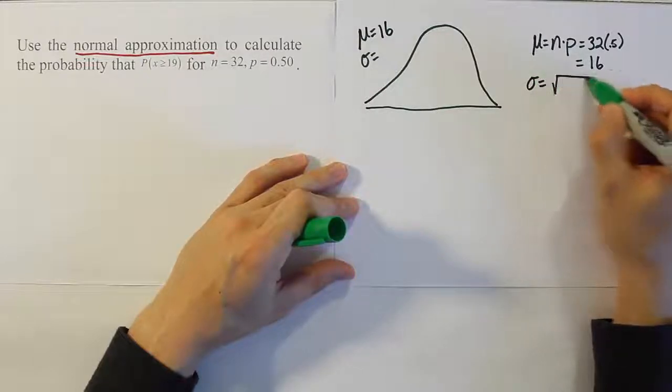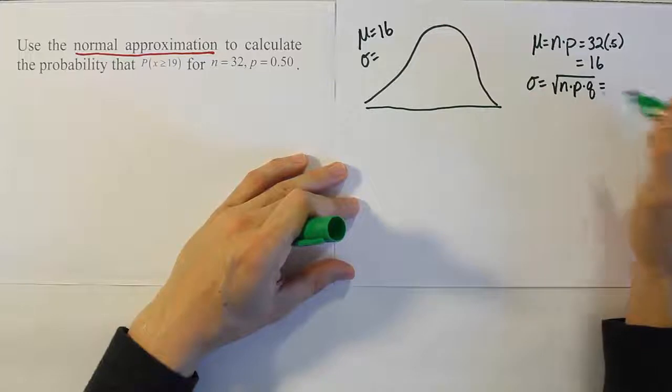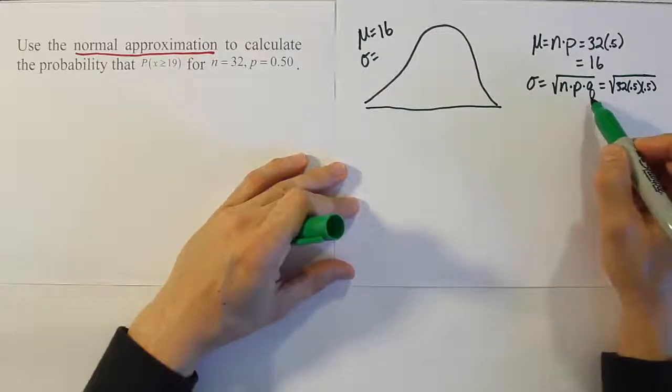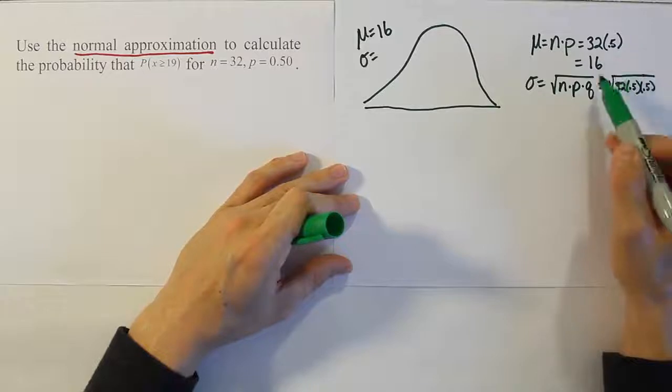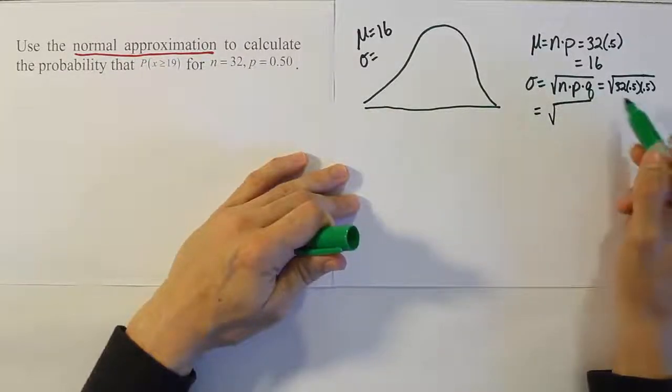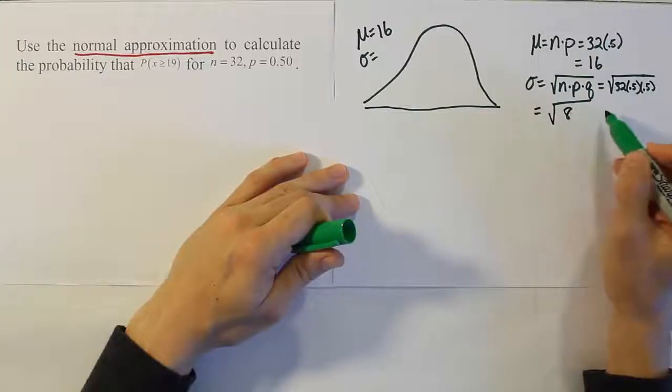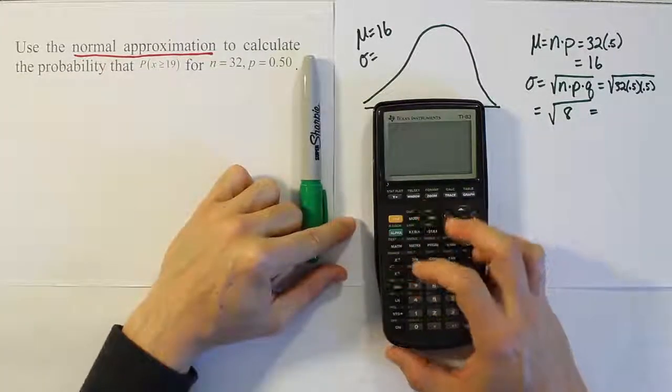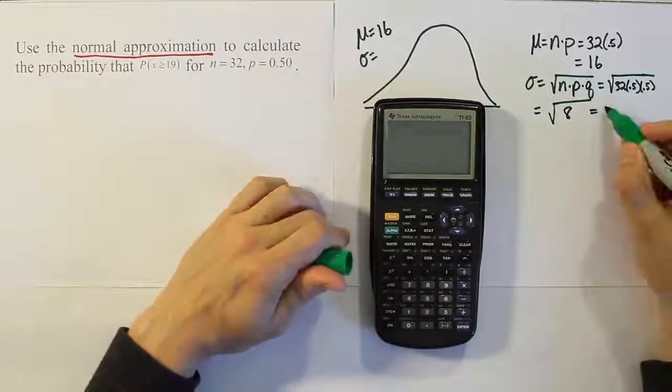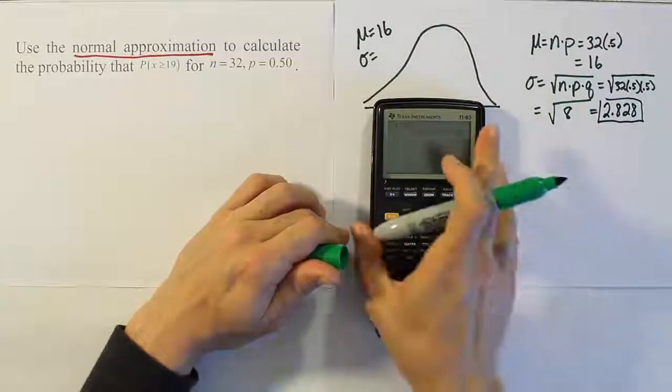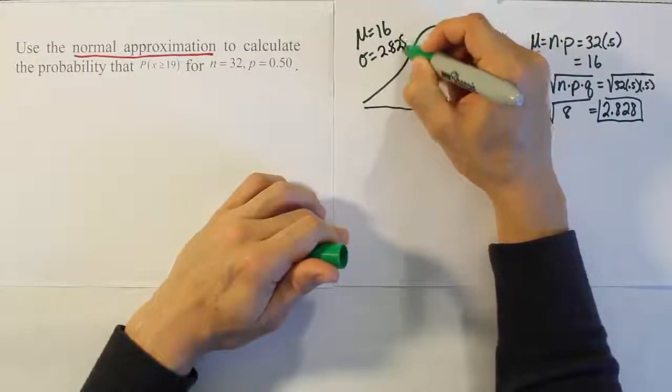The standard deviation formula is the square root of n times p times q. In that case it's going to be the square root of 32 times 0.5 times 0.5. The p and q must add up to 100%, so if p is 0.5 the q has to be the other 50%. That equals the square root of 8, which is 2.828 as our standard deviation.